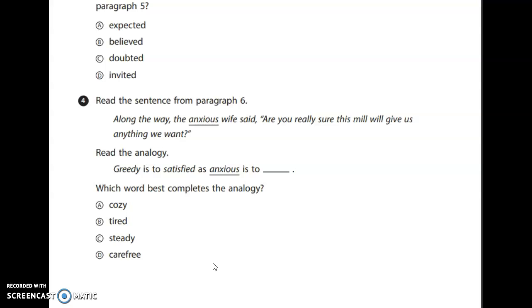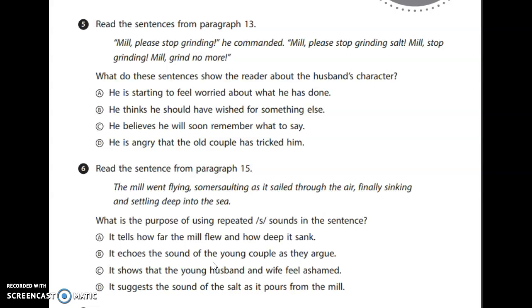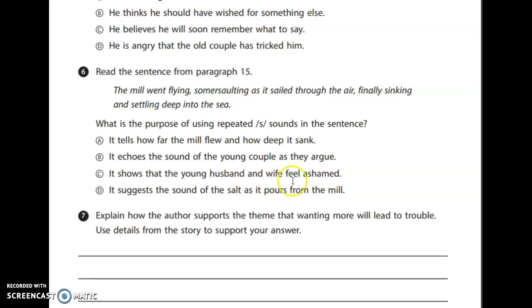Number four: read the sentence from paragraph six — 'Along the way, the anxious wife said, are you really sure this mill will give us anything we want?' Read the analogy: greedy is to satisfied as anxious is to blank. Number five: read the sentences from paragraph thirteen — 'Mill, please stop grinding. Mill, please stop grinding salt. Mill, stop grinding. Mill, grind no more.' What do these sentences show the reader about the husband's character? Number six: read the sentence from paragraph fifteen — 'The mill went flying, somersaulting as it sailed through the air, finally sinking and settling deep into the sea.' What is the purpose of using repeated S sounds in that sentence?